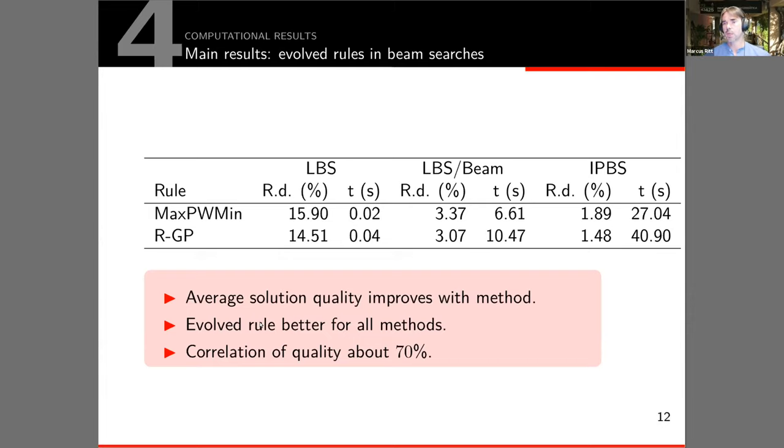In this table we compare the best rule from the literature which is called MaxPWMin, a rule which tries to select the task which has the maximum total time of its followers. We can see three methods: a lower bound search which starts with the smallest possible cycle time and increases it, a lower bound search with a beam, and iterated probabilistic beam search. We can see in all three of them that first the rule from the literature improves over these three methods, but also that the rule evolved by genetic programming is always better.